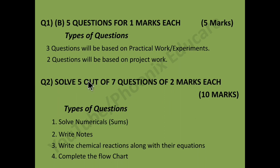Question number 2: solve 5 out of 7 questions, 2 marks each, so total will be 10 marks. Types of questions that can come: first is numerical — sums from Physics. Second is write short notes — minimum 4 points for 2 marks. Half marks per point. Third is write chemical reactions along with their balanced equations.